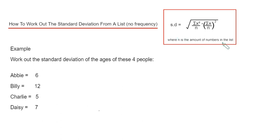The standard deviation can be found using the formula in the red box. It's the square root of sigma x squared divided by n, minus in a bracket, sigma x divided by n, close your bracket, squared. And n is the amount of numbers in the list. Sigma means sum of, and x are our data values.